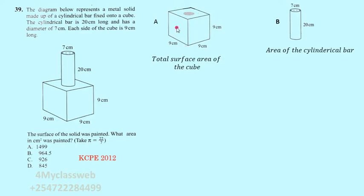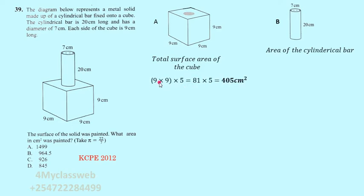Five of these are complete squares, each nine by nine. These five surfaces are: the front, the back, one on each side, and the bottom — one, two, three, four, five. The area of one square is nine times nine, multiplied by five: 81 times 5 equals 405 centimeters squared.